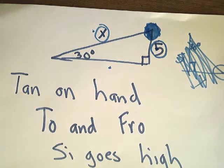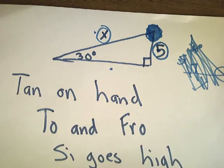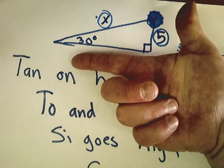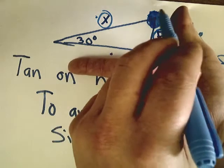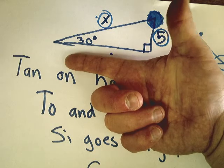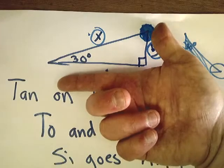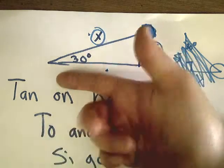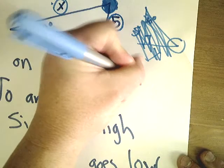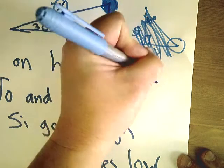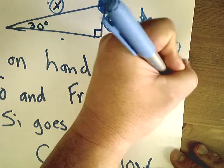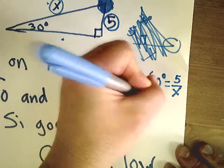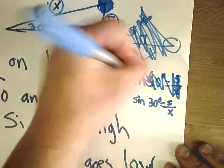'To and fro' helps you set up the equation when you have a tangent — since we don't have tangent, we skip it. 'Psi goes high' means you have the number on your thumb, which is the higher of the two digits. If you do, it's a sine question. This is a perfect sine question — I have psi goes high. So: sin(30°) = 5 over x.